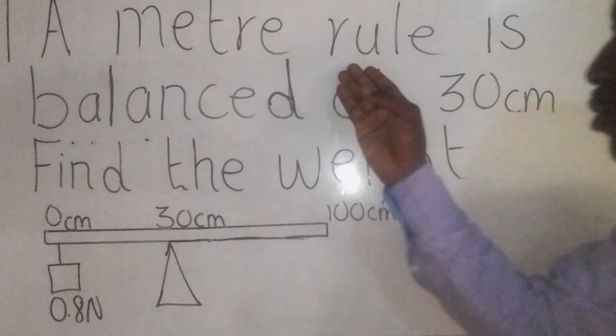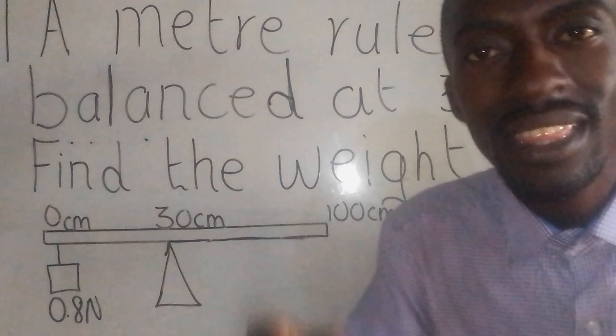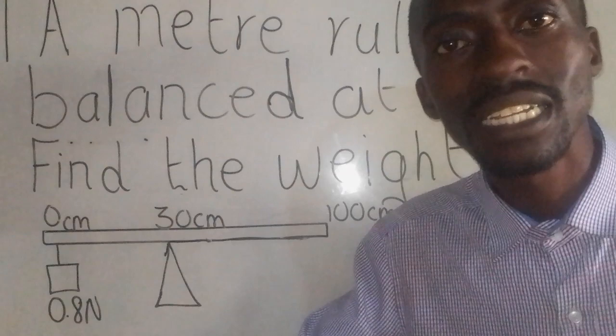We have a physics question that says a meter rule is balanced at 30 centimeters. Find the weight. When they say weight, weight is the amount of force acting on a massive object.